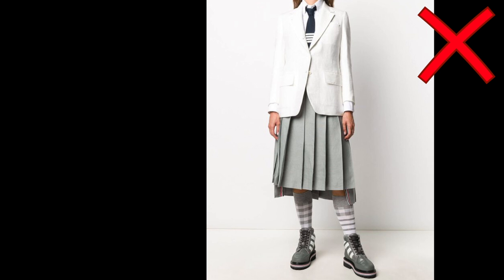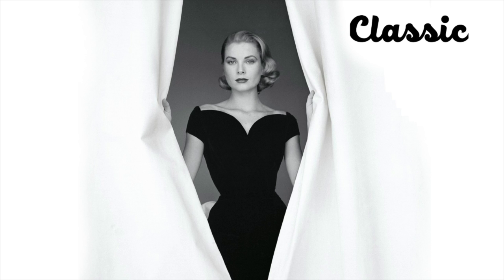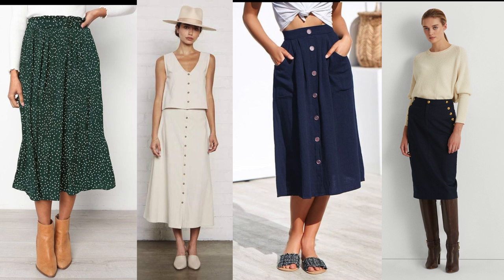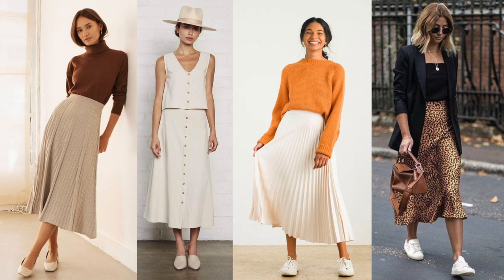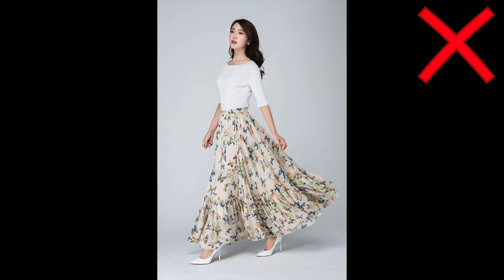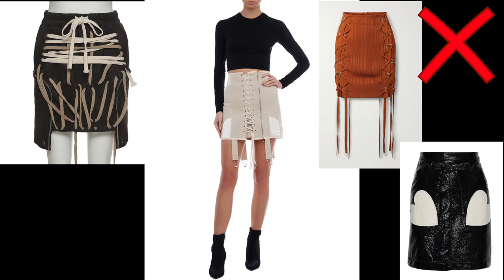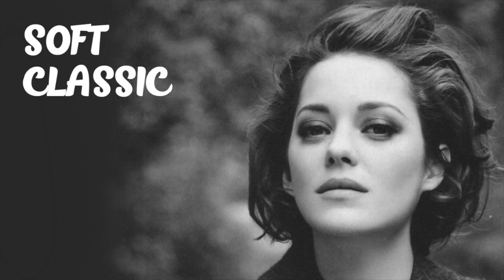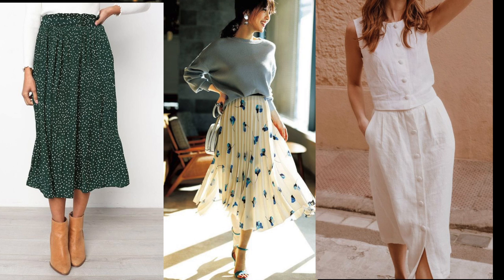For Classics: skirts are best when kept smooth and simple with clean lines — soft and straight or slightly flared, minimal detail. If standard straight, one inch below the knee; if slightly flared, mid-calf. Can be paired with a long jacket. Softly pleated skirts also work. They don't look their best in long pencil-slim styles, full flouncy styles, or over-detailed touches like pockets, gathers, or trim.